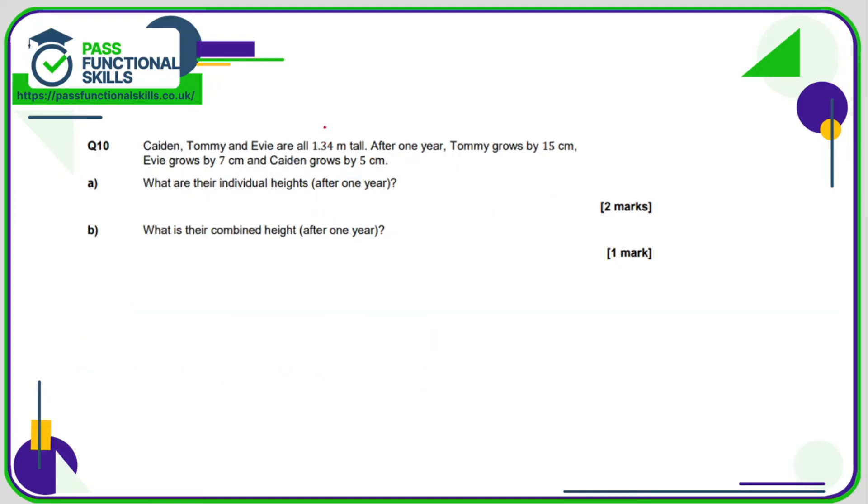Question number 10. I think for me the easiest thing to do is to turn 1.34 meters into centimeters. So that's 134 centimeters. So after one year Tommy is going to be 15 centimeters more than 134, so 134 plus 15 is 149. So Tommy is 149. Eevee by 7 centimeters, so 134 plus 7 is 141. And Caden, if we add 5, that's 139.